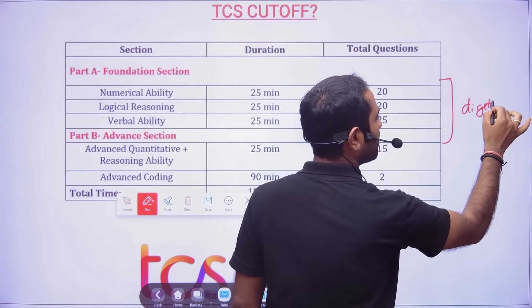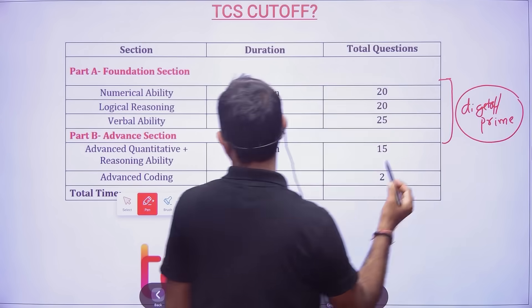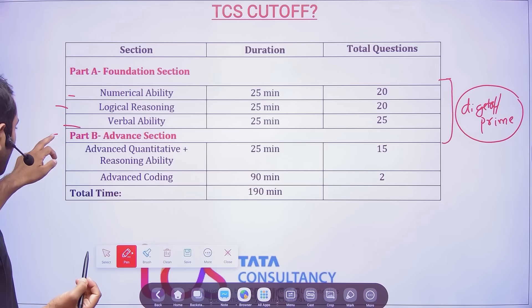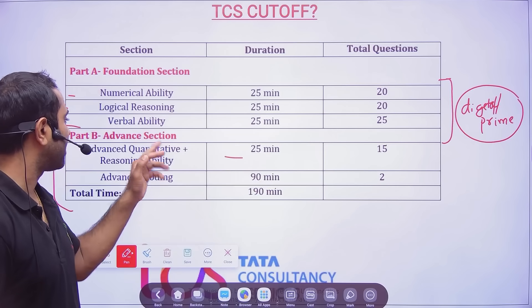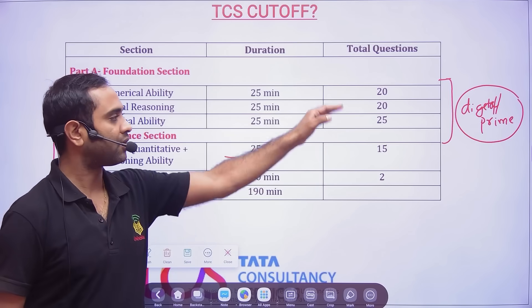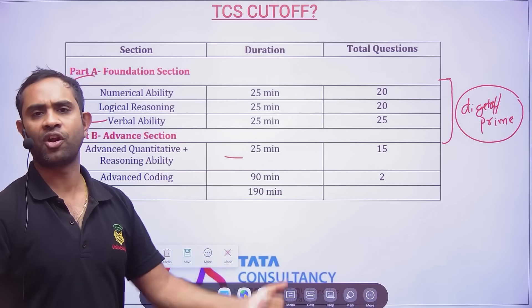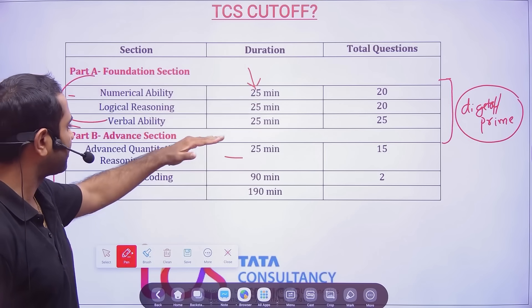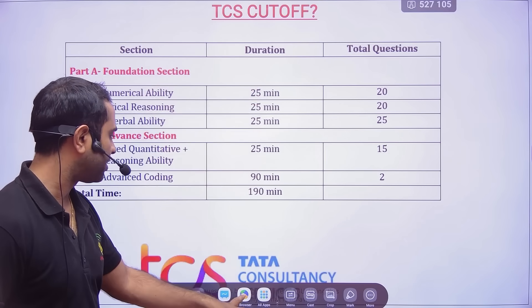Keeping the syllabus and pattern in mind, the foundation section is very, very important. If you don't perform well in numerical, logical, and verbal ability, there is no use performing well in coding. Many students say 'I solved two coding questions and did well in advanced aptitude' but if they didn't do well in the foundation section, they will not get Digital or Prime. Foundation first, then advanced.